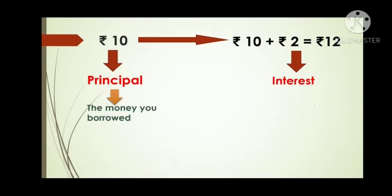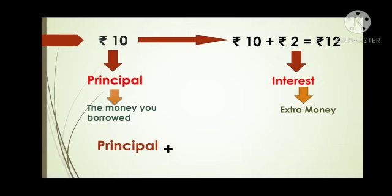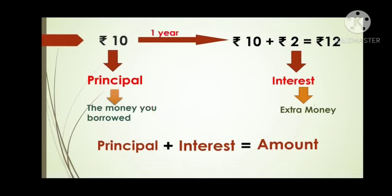The principal amount is the money borrowed. Interest is the extra money paid after a period of time. When we calculate the total amount to be paid to the bank after a period of time, the formula is: Principal (the money borrowed from the bank) plus Interest (the extra money paid) equals Amount (the total money to be paid). The time period is measured in years.